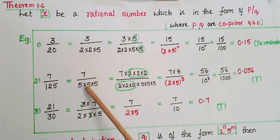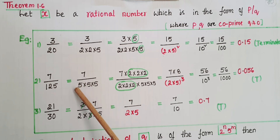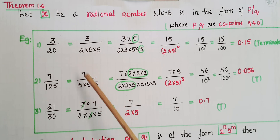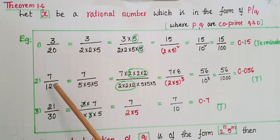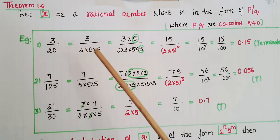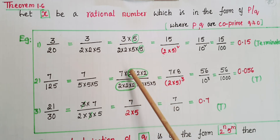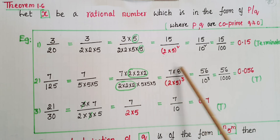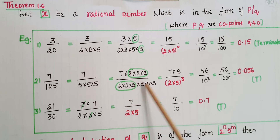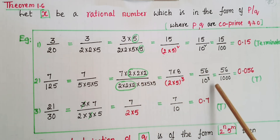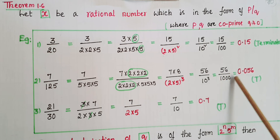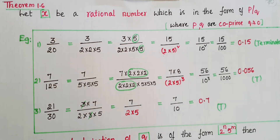Next one is 7 by 125. So 7 by 5 into 5 into 5 — this is in the form 2 to the power of n into 5 to the power of m (you can write 2 to the power of 0 here), so this rational number has a terminating decimal expansion. To convert to decimal form, multiply with three 2s in the denominator and numerator: 7 into 8 is 56. The denominator has three 2s and three 5s, giving 2 into 5 whole cubed — that is 56 by 1000, which equals 0.056.